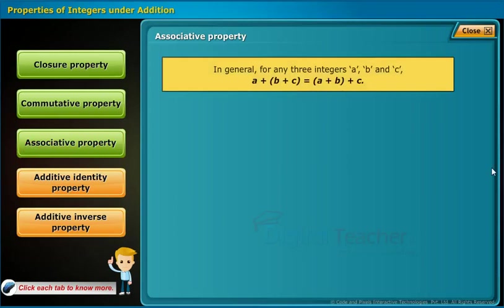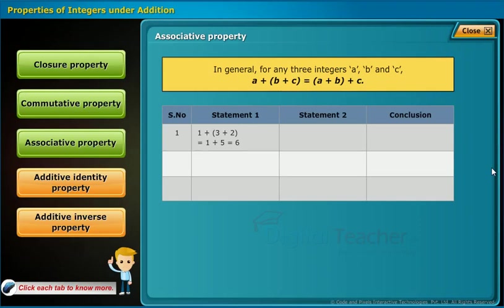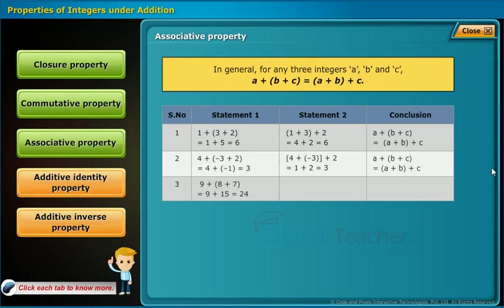Associative property defines that for any three integers A, B, and C: A plus (B plus C) equals (A plus B) plus C. For example: 1 plus (3 plus 2) equals 6 and (1 plus 3) plus 2 equals 6. This holds for the second and third statements as shown in the table. Therefore, the table follows associative property under addition.